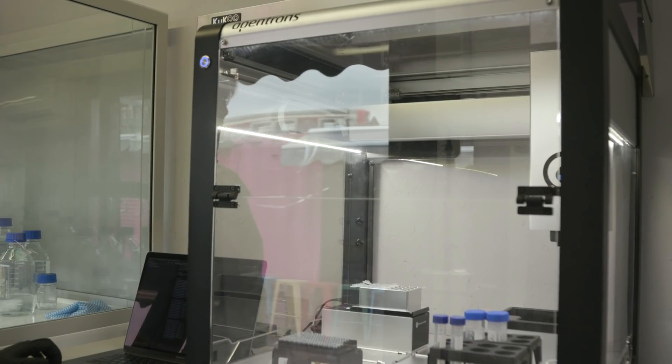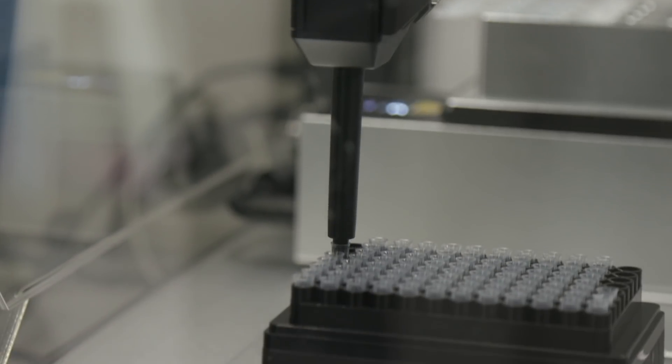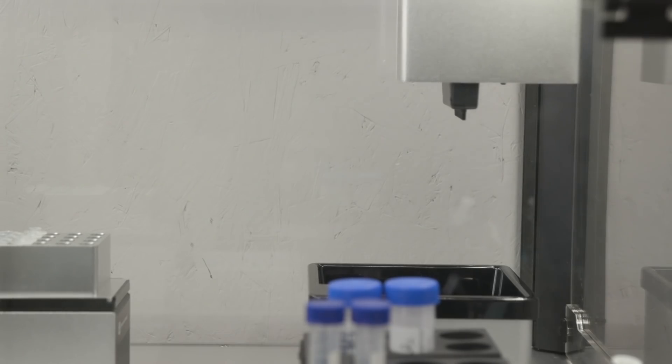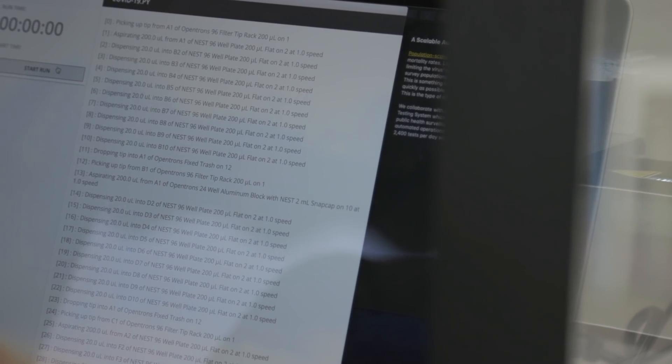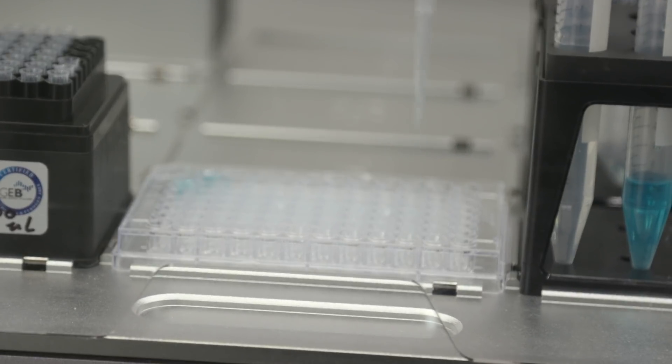U.S. company Opentrons donated two of its liquid-handling machines to the lab for their work. These plates can test up to 96 samples at a time. These are also PCR diagnostic tests, like the ones we saw with the other companies, but these are open-source rather than proprietary, and OpenCell says they would like to get the cost of testing down to £5 to £10 per test.